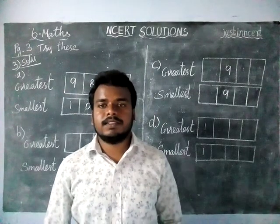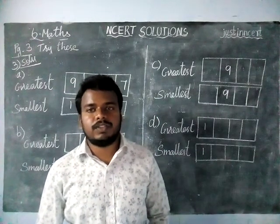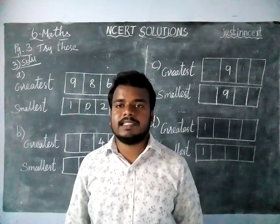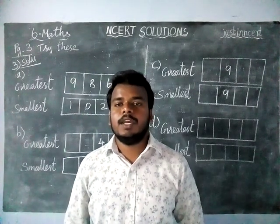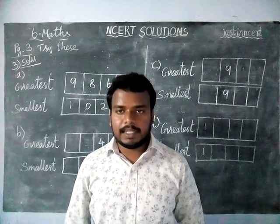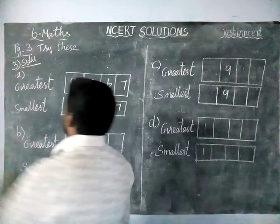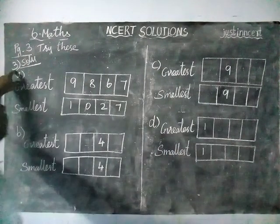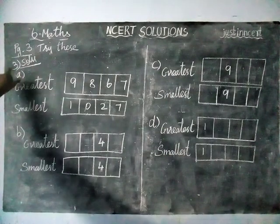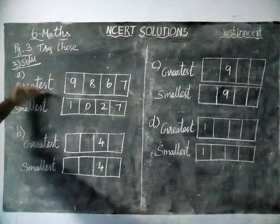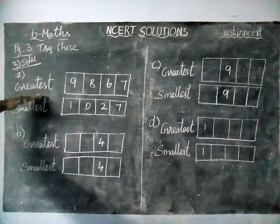Hi students, welcome to NCRD Solutions. Today we are going to see 600 Maths, page number 3, Try This, third question. In this they have given a condition — it is done in the book itself, so listen carefully.